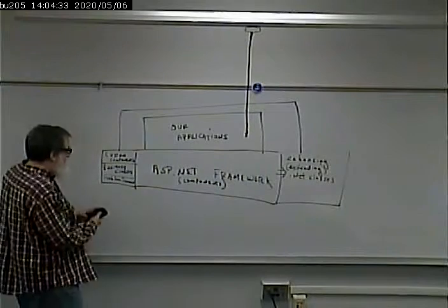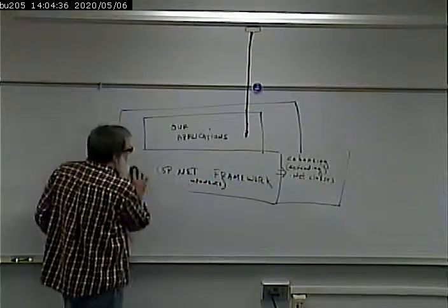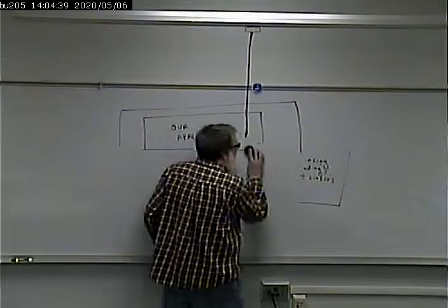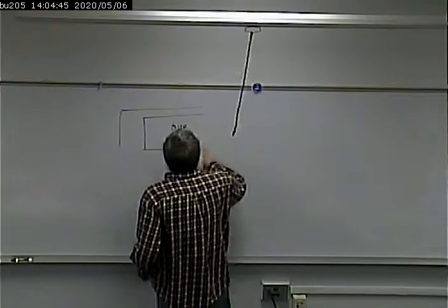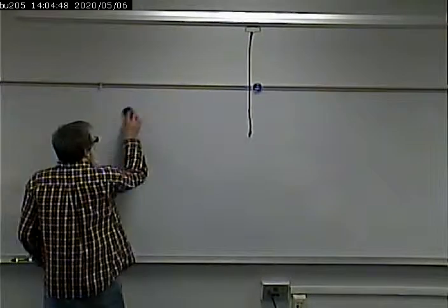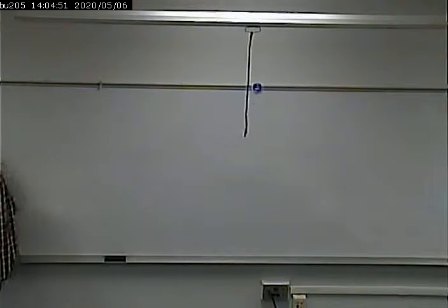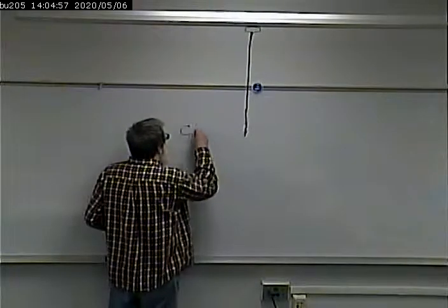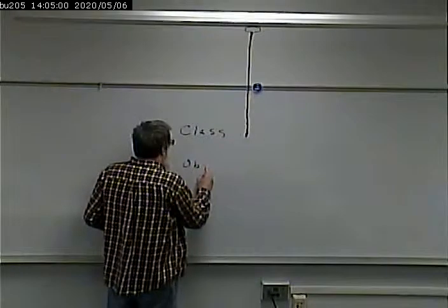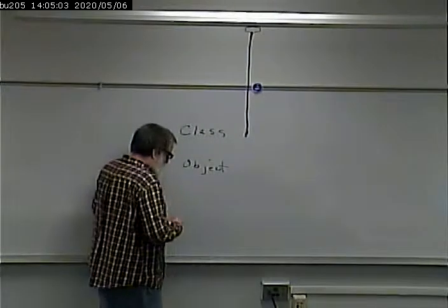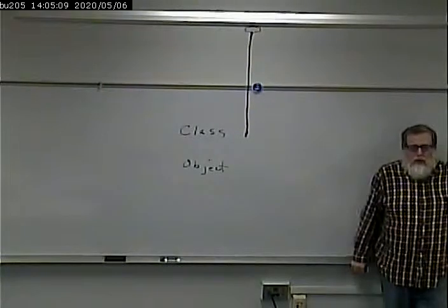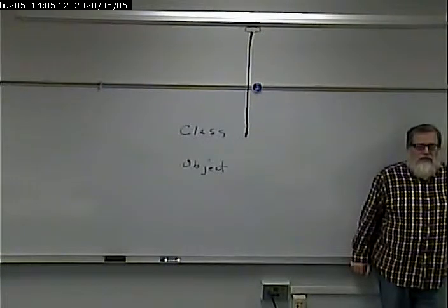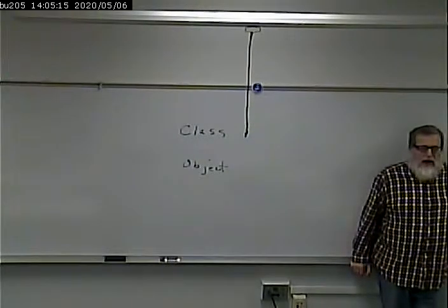I've used the terms 'class' and 'object' throughout the course. Let's start out by differentiating between those two. What is a class? What is an object? If I talk about a class or an object, what am I talking about, and how are they different?